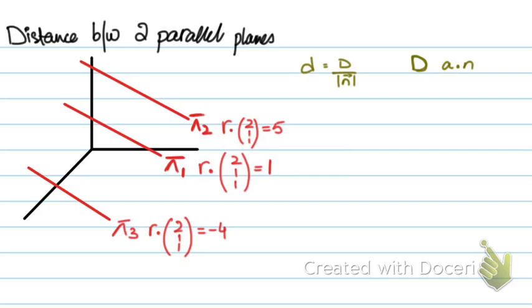So, if I have to calculate the distance small d for this one, d over modulus of n, magnitude of the normal vector. So, d, 5 over 4 plus 1 plus 1 under root, root 6. So, this is a perpendicular distance from the origin.